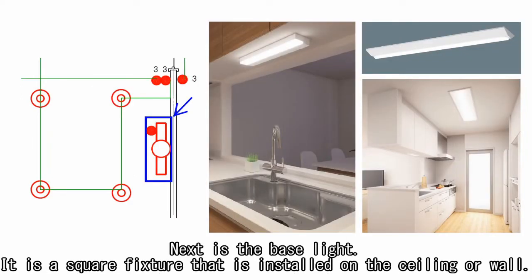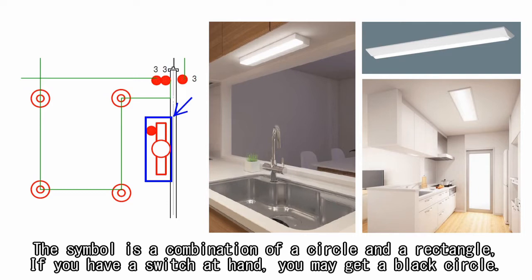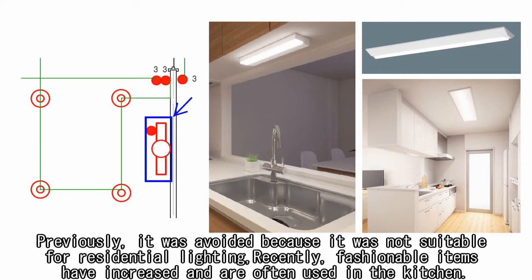Next is the base light. It is a square fixture that is installed on the ceiling or wall. The symbol is a combination of a circle and a rectangle. If you have a switch at hand, you may get a black circle. Previously, it was avoided because it was not suitable for residential lighting, but recently fashionable items have increased and are often used in the kitchen.